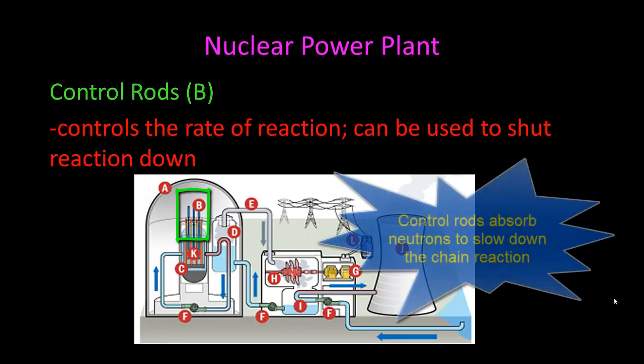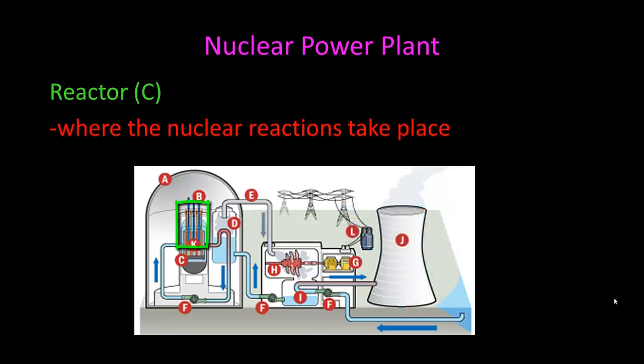Then we have our control rods. They control the rate of reaction, and they can be used to shut down the reaction or slow it down. The reactor is where the nuclear reaction takes place and contains the control rods.